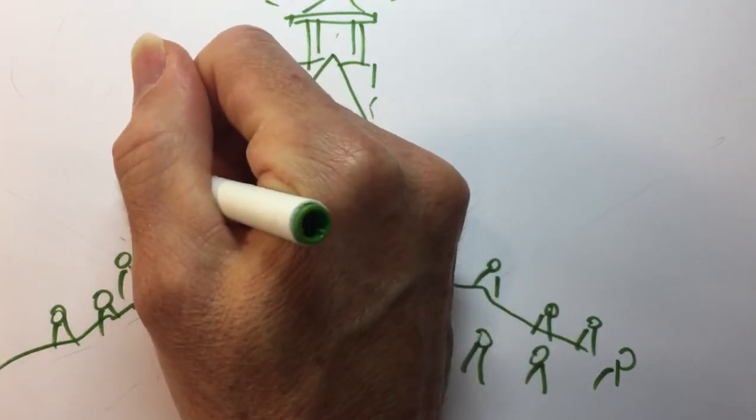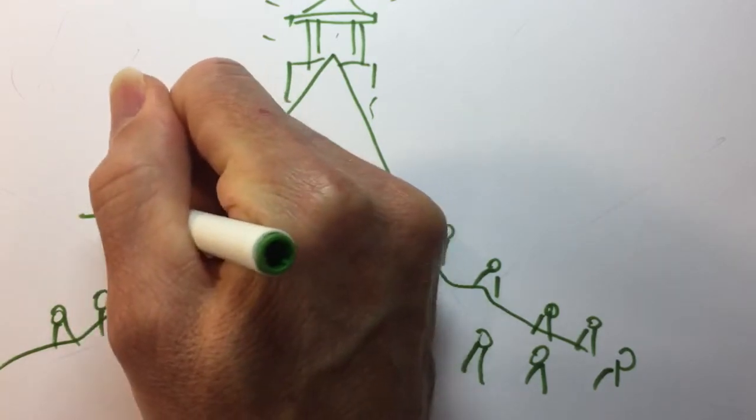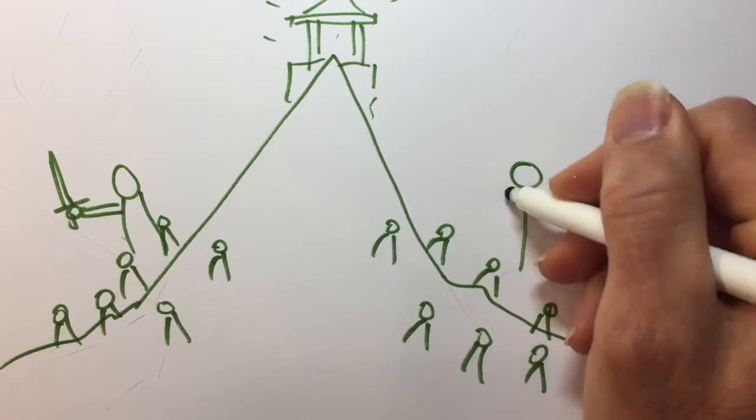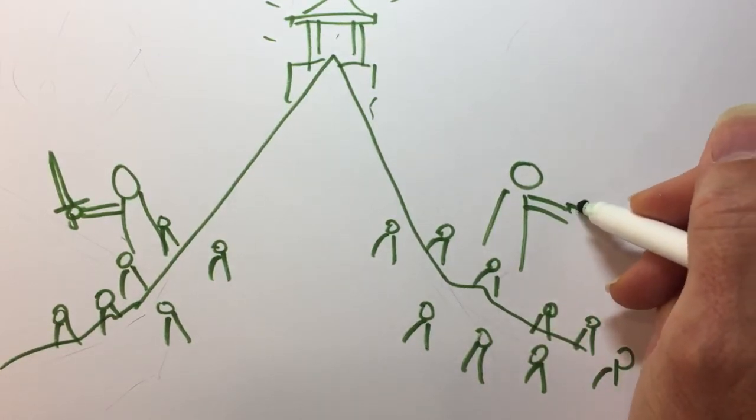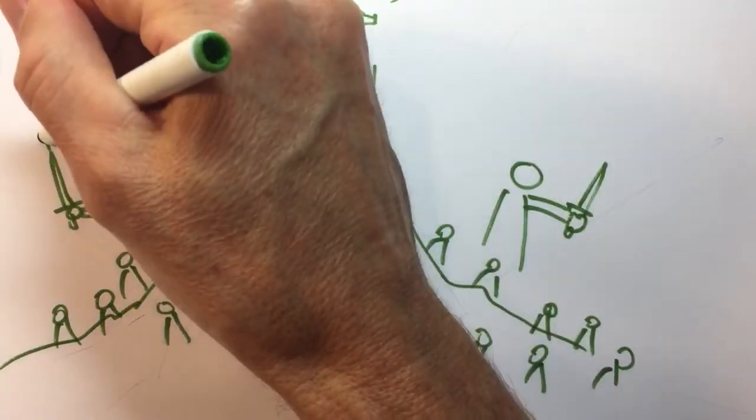And what people are doing a lot in lots of parts of the world is they're holding swords. Here's a person holding a sword. And here's another person from another part of the world holding a sword. We all have heard of what swords are. They're big tools that people use to hurt one another.